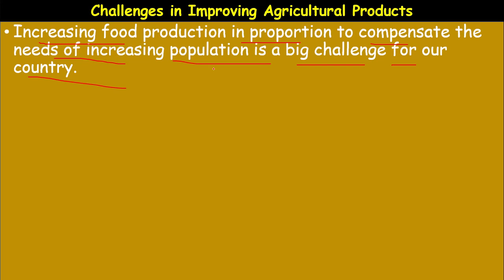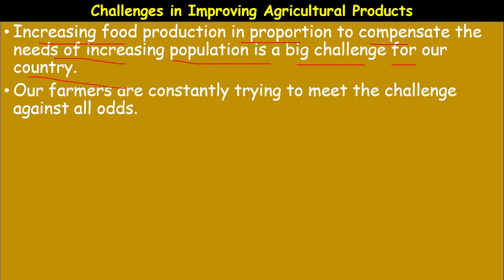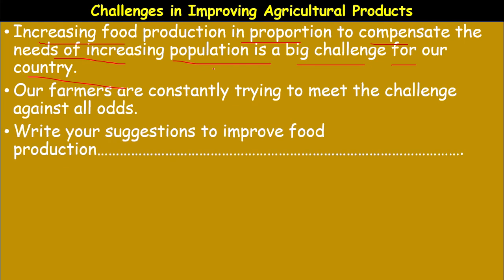As the population is increasing by multiplication, but food production is increasing only by addition. So there is a need for increasing food production. Our farmers are constantly trying to meet the challenge against all odds — meaning hurdles and struggles. An educated farmer can compensate for these problems by applying knowledge in the process of agriculture and gain maximum benefits.